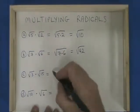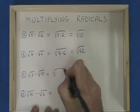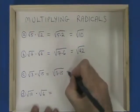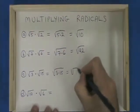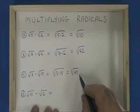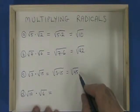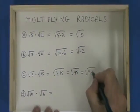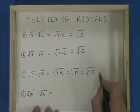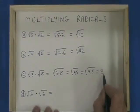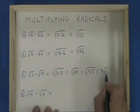Root 3 times root 15 is the square root of 3 times 15, which is the square root of 45. And 45 does have a factor which is a perfect square, which is 9, so we break it into 9 times 5. The square root of 9 is 3, which comes outside the radical, and the 5 is trapped inside.